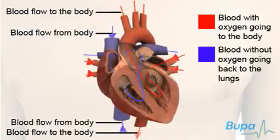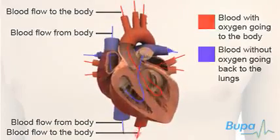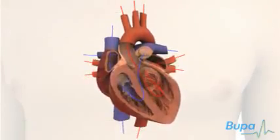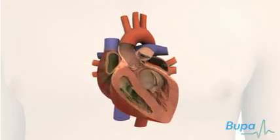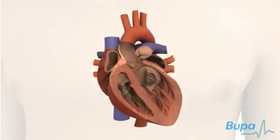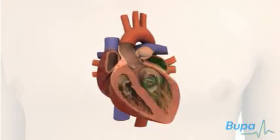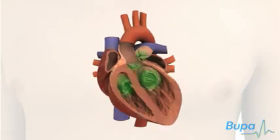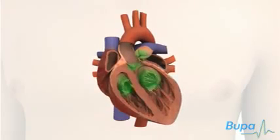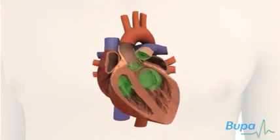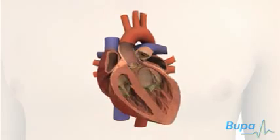To do this effectively, your heart is divided into four compartments or chambers. There are two chambers on the right side of the heart and two on the left. A valve lies at the exit of each chamber. The valves ensure that blood flows in one direction only.